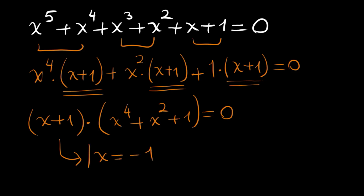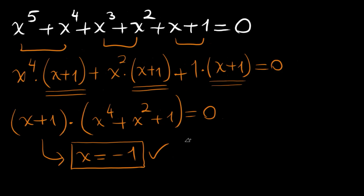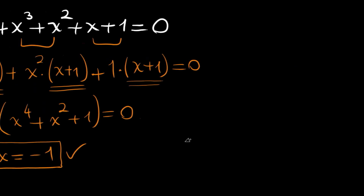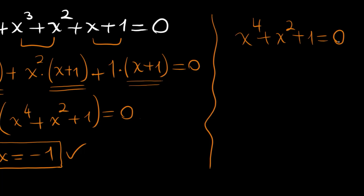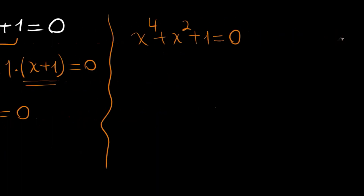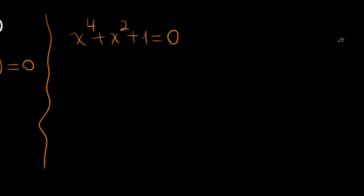So the first root here is obvious: x is equal to minus 1, the real root. Now we are going to solve the quartic x to the 4 plus x squared plus 1 is equal to 0, and find the 4 roots for this quartic.